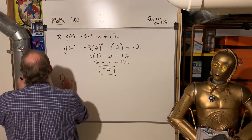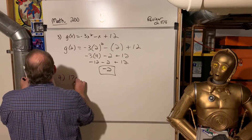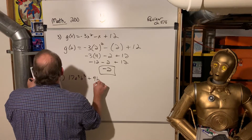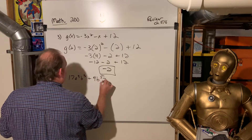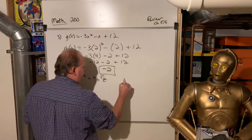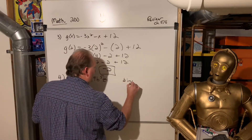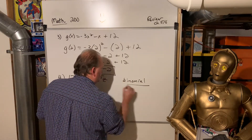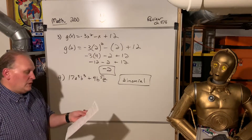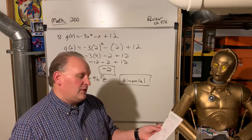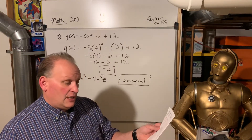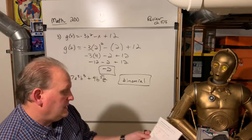Number 4: determine what 7a cubed bq plus 4b to the 5th z is. There are two terms, so it's a binomial. If there's one term it's a monomial, two terms it's a binomial, three terms it's a trinomial — otherwise you write 'other polynomial.'